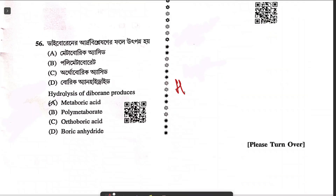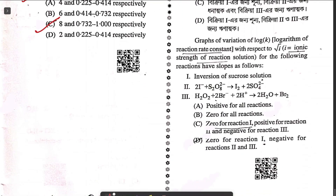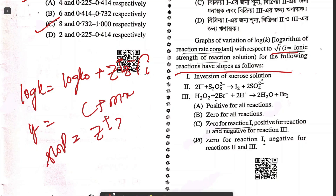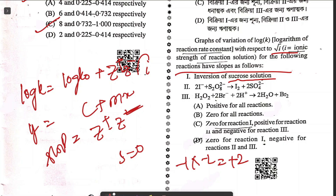Question fifty-six: hydrolysis of diborane gives B(OH)3, i.e., orthoboric acid. Question fifty-seven: graph of log K vs √I — this is the Brønsted-Bjerrum equation: log K = log K₀ + Z₊Z₋√I. Slope = Z₊ × Z₋. For reaction one (inversion of sugar) Z₊Z₋ = 0, so slope is zero. For reaction two (I⁻ + I2²⁻): (−1)(−2) = +2, positive slope. For reaction three: (−1)(+1) = −1, negative slope. The only possible answer is option C.